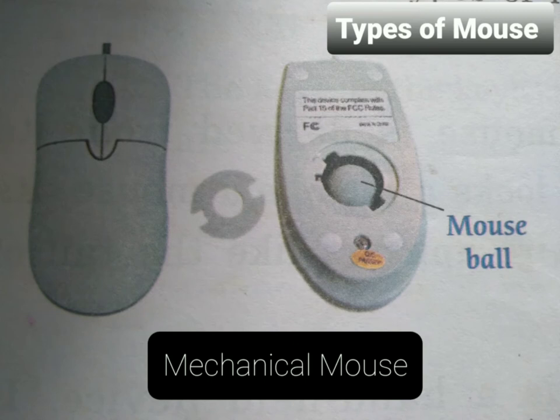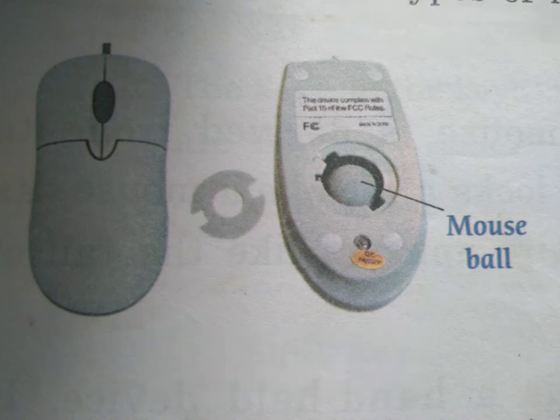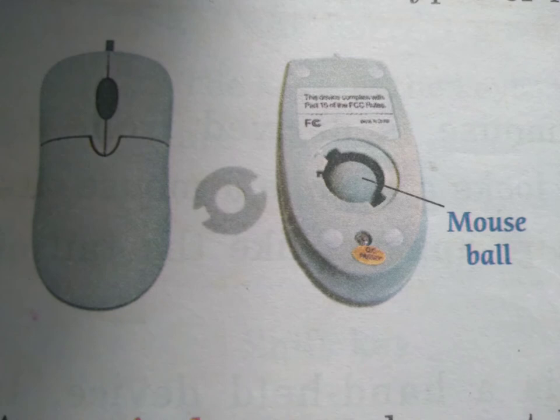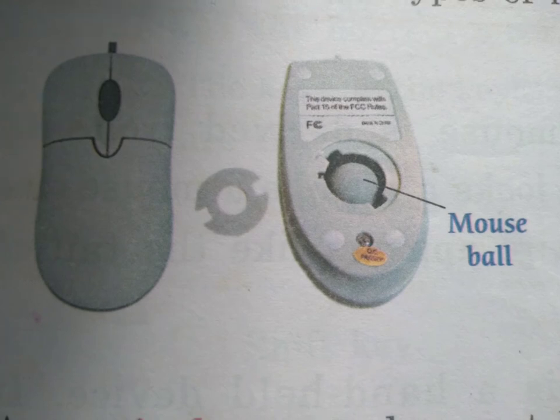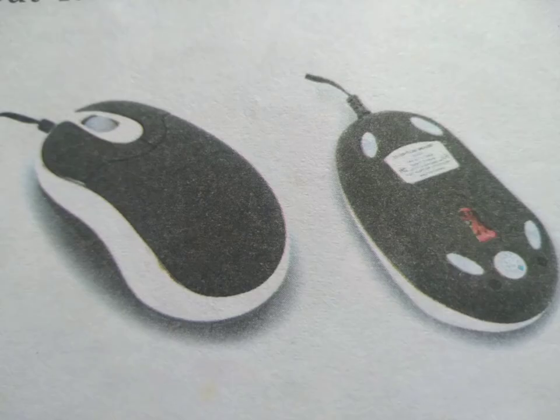You can see in the picture, on the underside of the mouse, one ball is there. That ball is known as the mouse ball, or metal or rubber ball. Without this ball, the mouse cannot work.